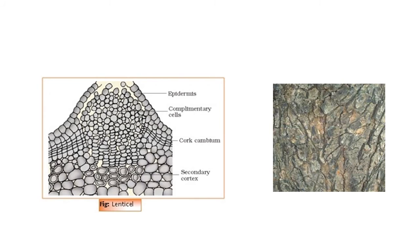In the fourth figure, lenticels and bark are shown. The first part shows lenticels — the arrangement of cells in the epidermis region, complementary cells, cork cambium arrangement, and the secondary cortex region. Gradually these cells are converted into the lenticle structure, forming openings for exchange of gases.